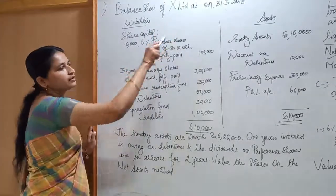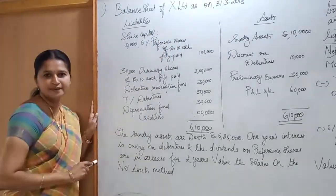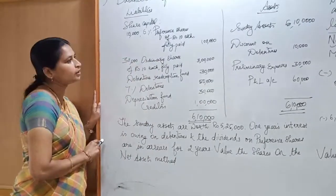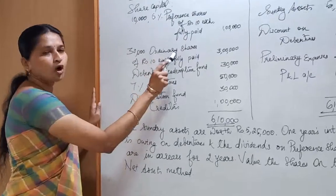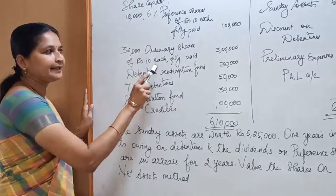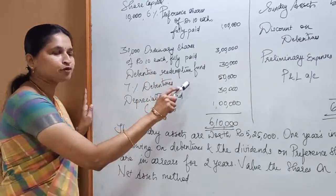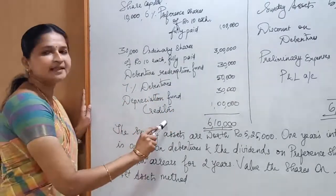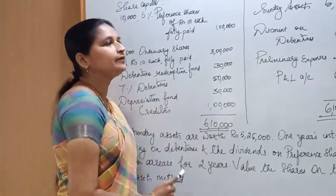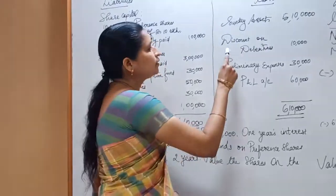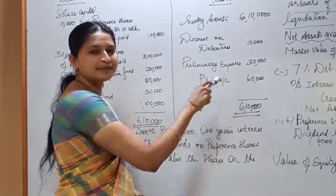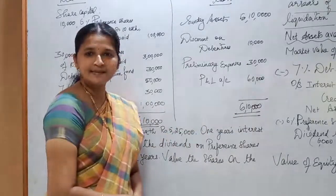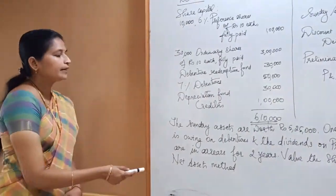The balance sheet of X Limited as on 31-3-2018 is given. On the liability side: share capital includes 10,000 6% preference shares of rupees 10 each, fully paid — 1 lakh; and 30,000 ordinary (equity) shares of rupees 10 each, fully paid — 3 lakhs. Debenture redemption fund 30,000; 7% debentures 50,000; depreciation fund 30,000; creditors 1 lakh. On the asset side: sundry assets 5,10,000; discount on debentures 10,000; preliminary expenses 30,000; profit and loss account (debit balance, i.e., loss) 60,000. Total is 6,10,000.